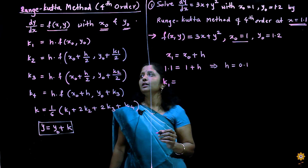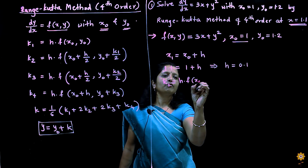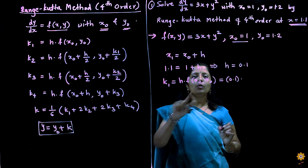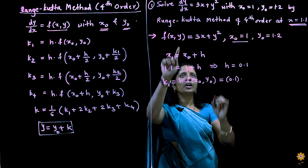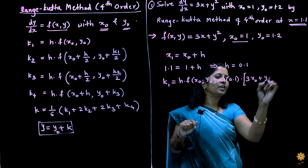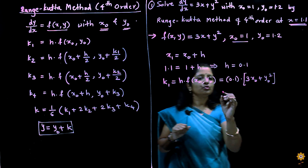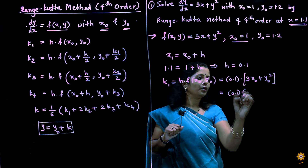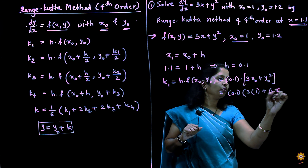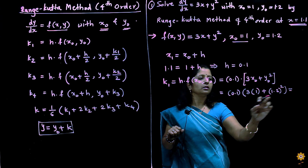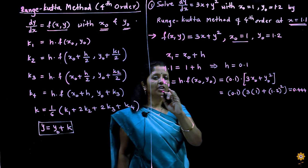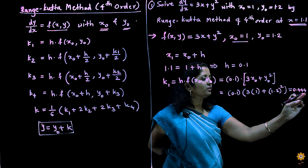k1 is equal to h into f of x0, y0. With h equal to 0.1, and f of xy equal to 3x plus y squared, we substitute x0 and y0: 0.1 into 3 into 1 plus 1.2 squared. Calculating this expression gives k1 equal to 0.444.